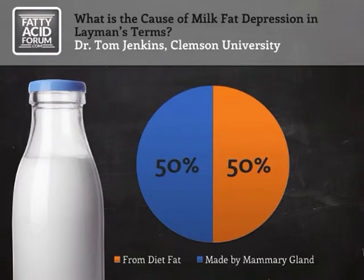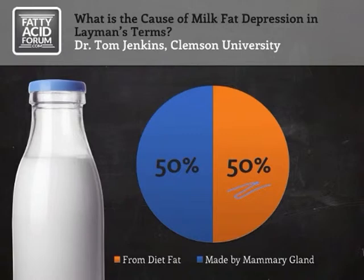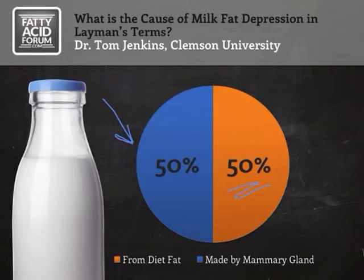When you look at how the mammary gland synthesizes fat, half of it comes from the diet — shown here in orange on the right-hand side. That's fat consumed from the diet, coming from forages, grains, and fat supplements that find their way into the bloodstream and are picked up by the mammary gland and assembled directly into fat. But that only accounts for 50% of the fat made by the mammary gland. The other 50% is synthesized by the mammary gland, and it uses acetate as the fuel or carbon source for that synthesis.